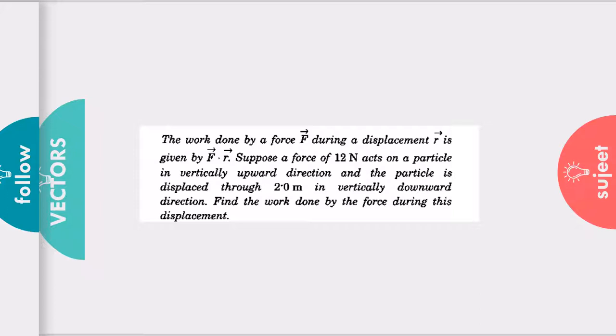Here it is given the force magnitude is 12 Newton, its direction is j cap. J cap is the symbol for the upward direction. And the particle is displaced through 2 meters in vertically downward direction, so it is minus j.